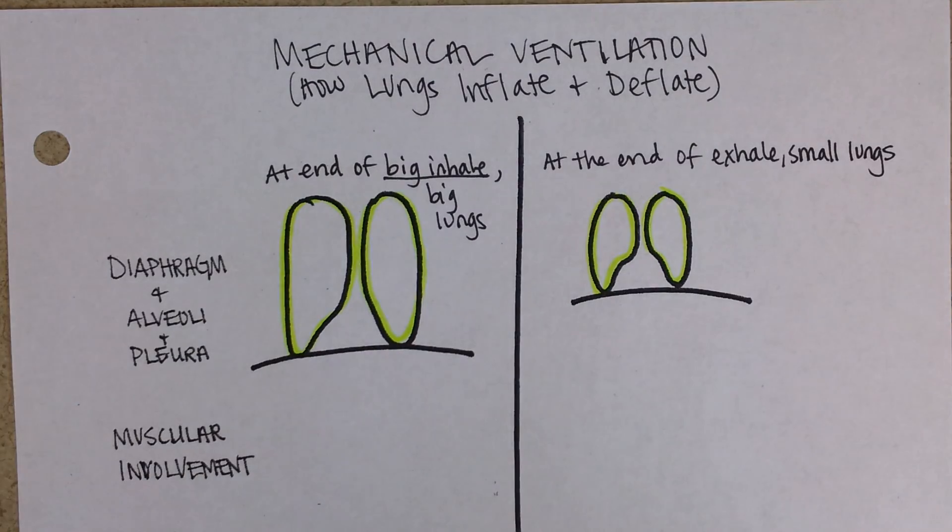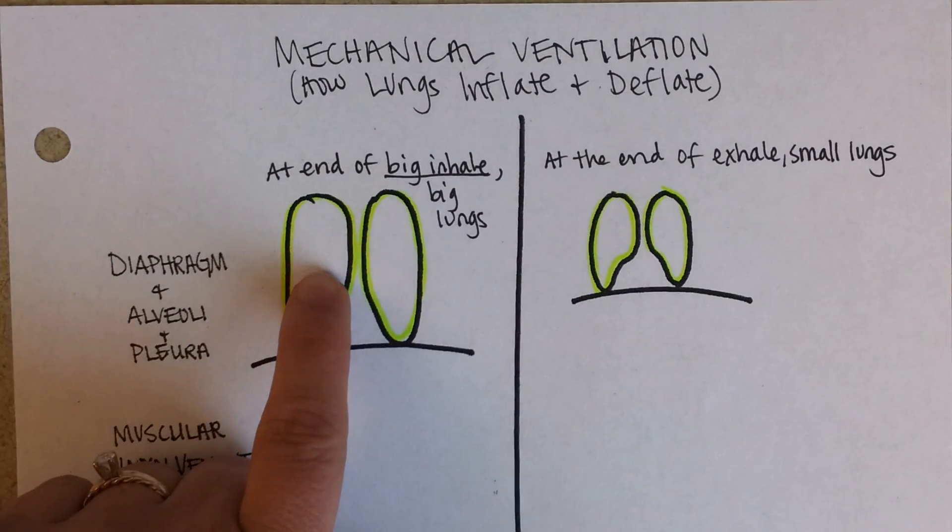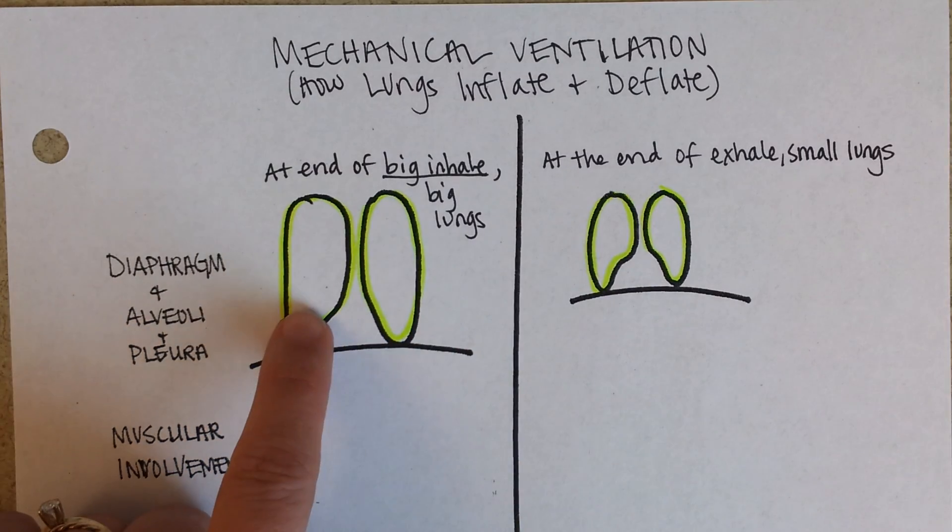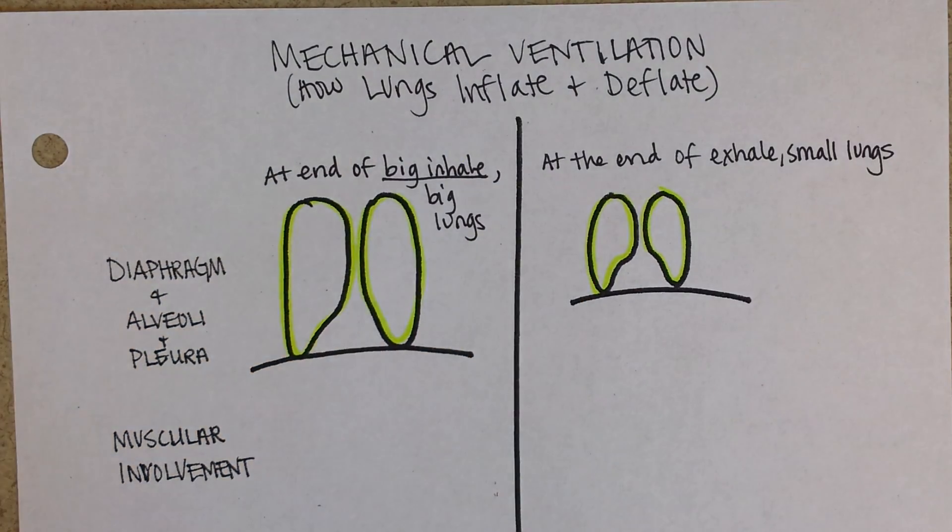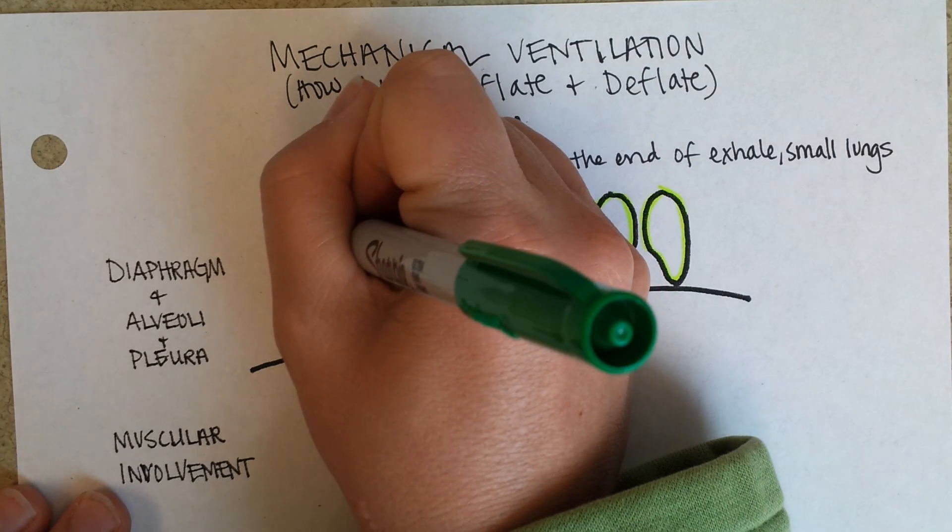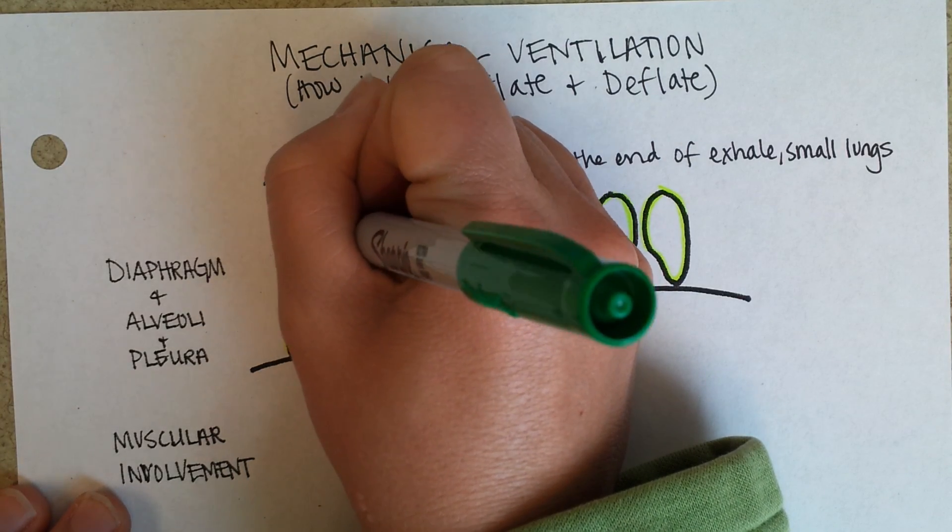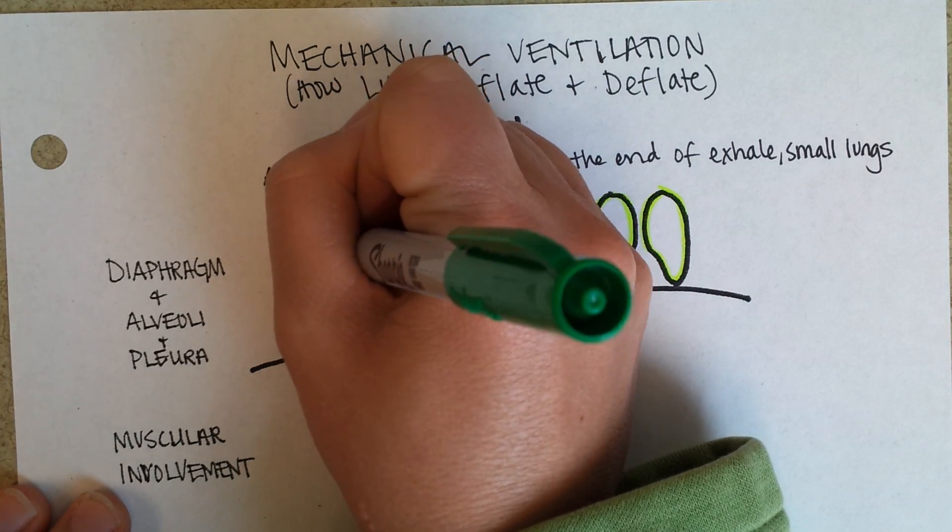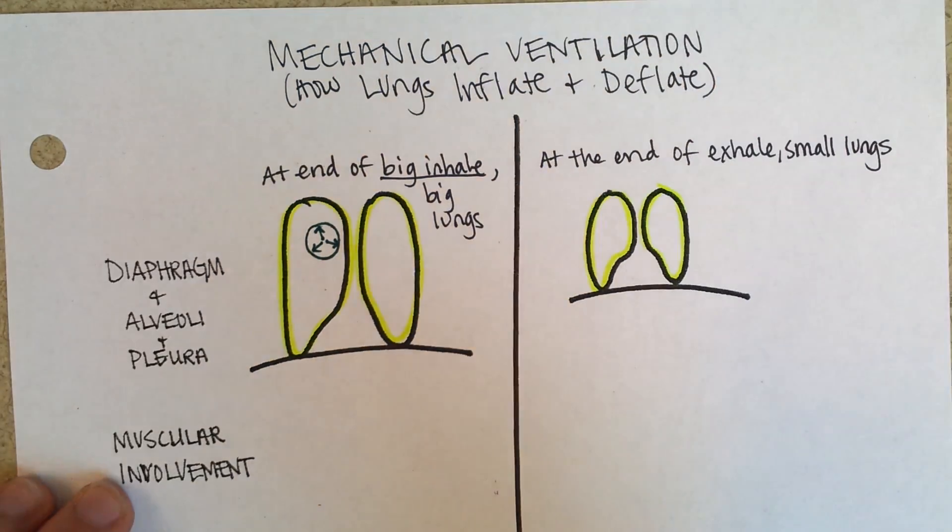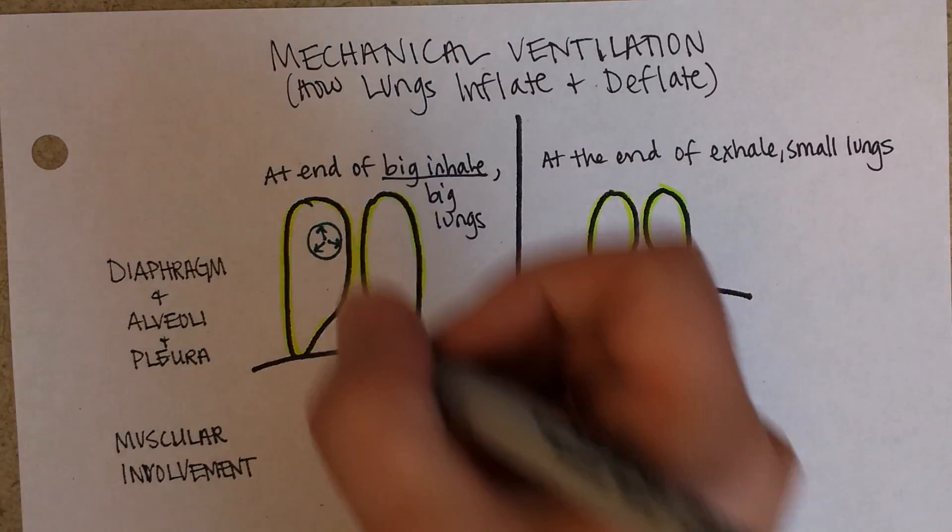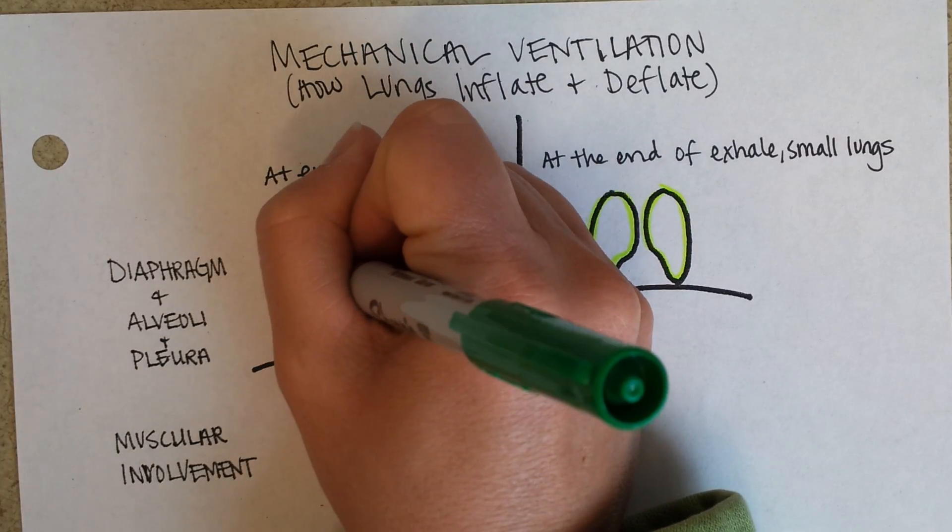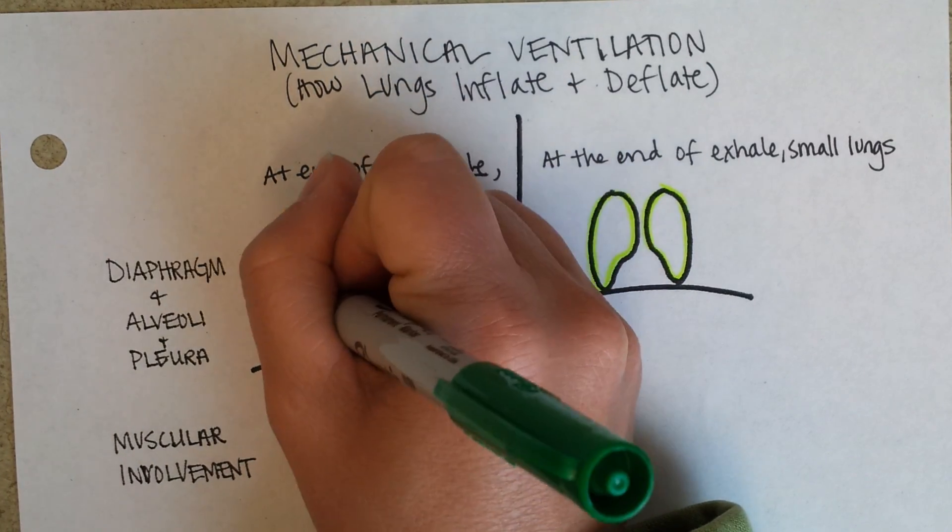But there are the same number of alveoli in the lungs here as there are here. There's about a million in this lung and about a million in this lung here. So what must be happening is that the individual alveoli are either getting bigger or smaller. If this represents one alveolus, then look how big it's expanding during the inhale. And all the millions are doing that along with it. A million alveoli doing this.